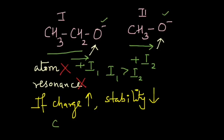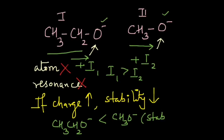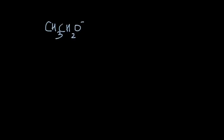Therefore, CH₃CH₂O⁻ — the ethoxide ion — is less stable than CH₃O⁻. The +I effect of the ethyl group has increased the charge more than the +I effect of the methyl group, and if charge increases, stability decreases. Since the ethoxide ion is less stable than the methoxide ion, CH₃CH₂O⁻ will be more reactive and hence more basic than CH₃O⁻.